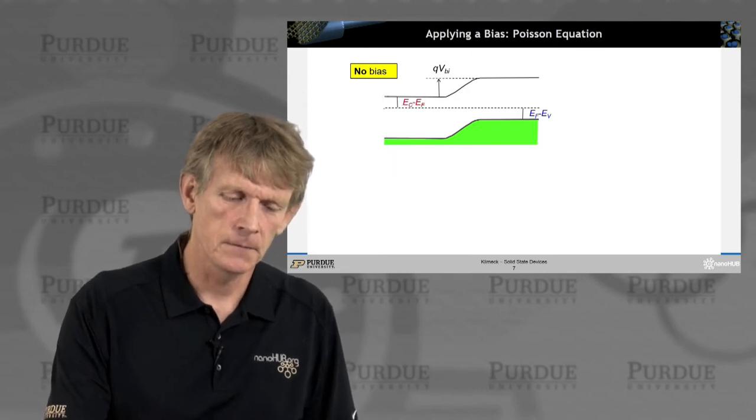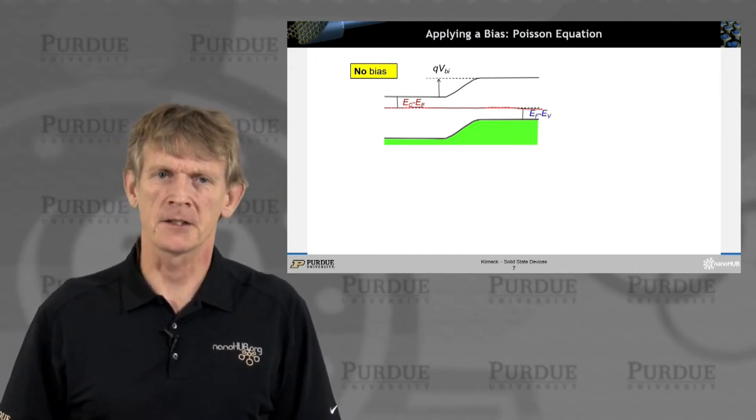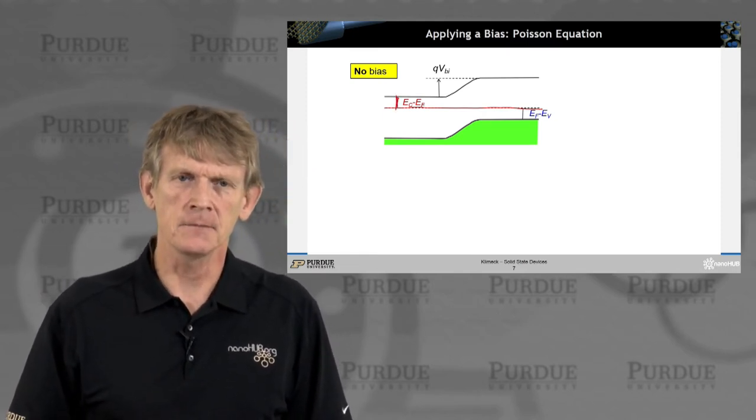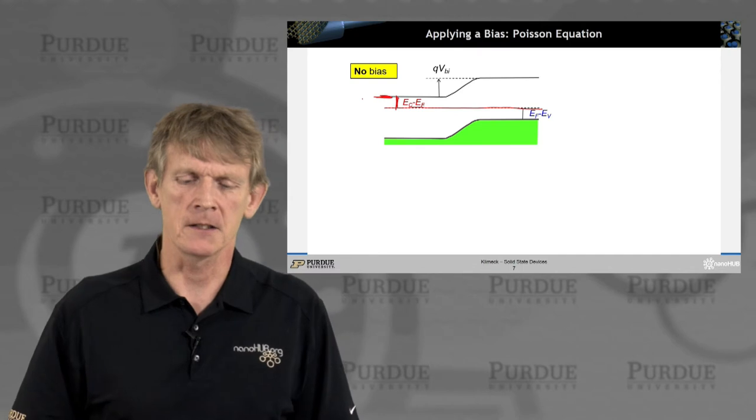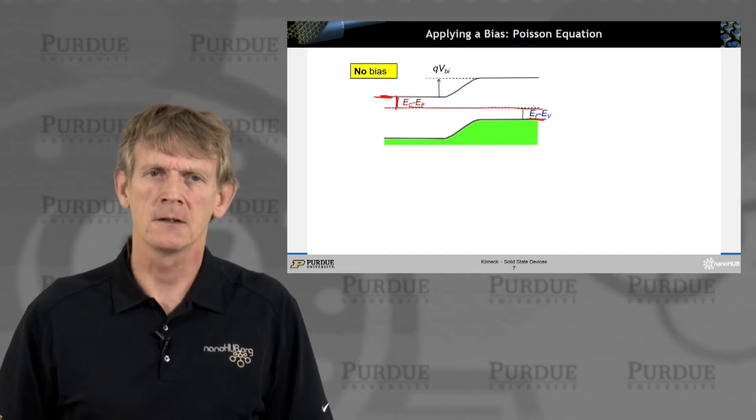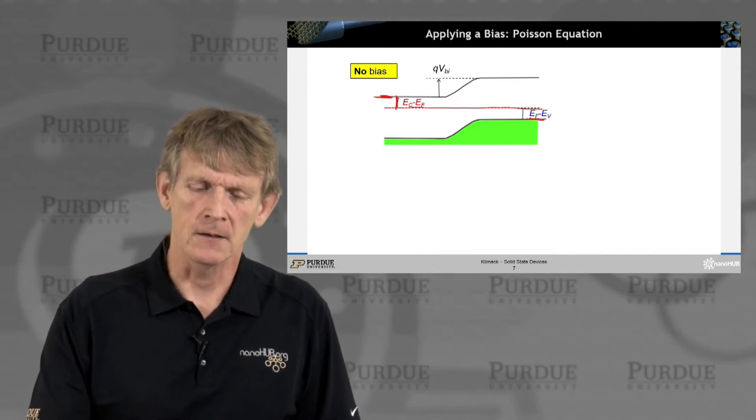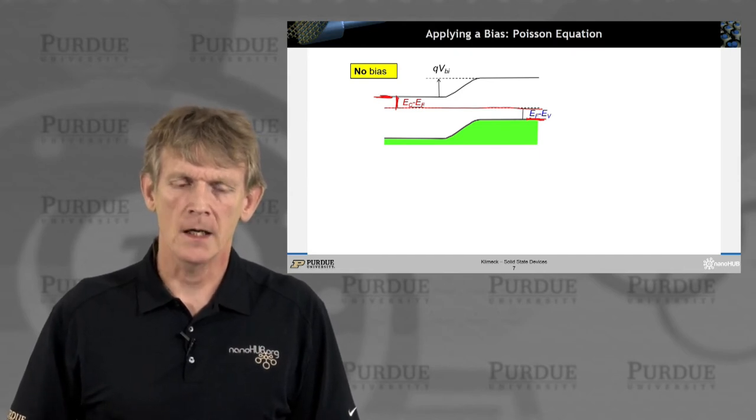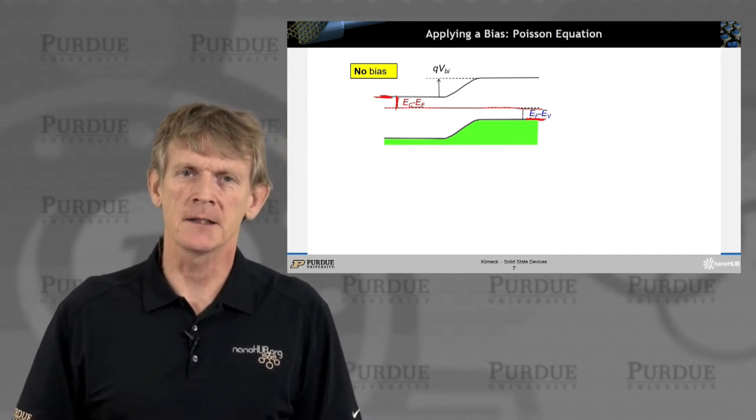We have a Fermi level that runs all the way across. So that's how we start drawing band edge diagrams. We determine the Fermi level on the N side here by the doping. And we'll, by that token, obtain this conduction band edge here. We'll draw the valence band edge and determine the Fermi level on the P-doped side and begin this line here.